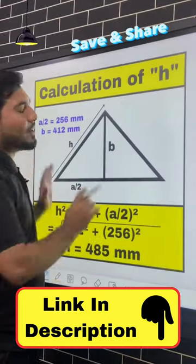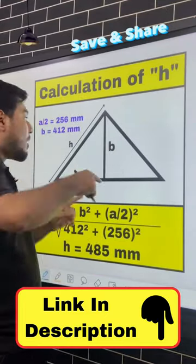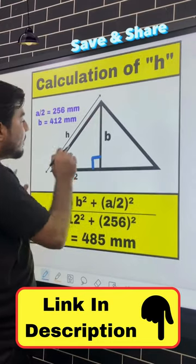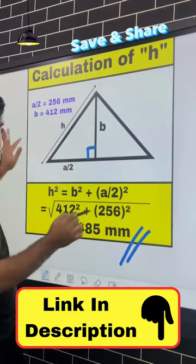Now, we have to construct a triangle so that we can visualize the right angle of the triangle and find out the edge. You can see that this is B and this is A by 2. The right angle of the triangle is made, so H will be 485 mm.